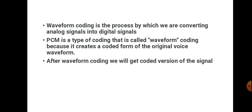Basically, by waveform coding, we are generating a coded version of analog signals. Suppose we are transmitting a voice signal — waveform coding is used to convert this voice signal into a digital format. An example of waveform coding is PCM, and PCM is a type of coding called waveform coding because it creates a coded form of the original voice waveform.